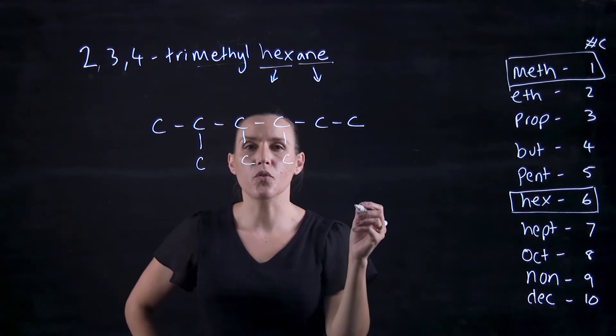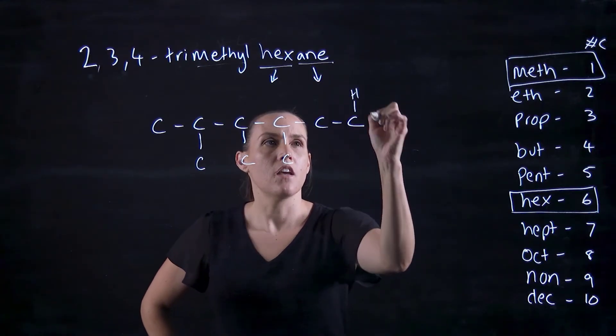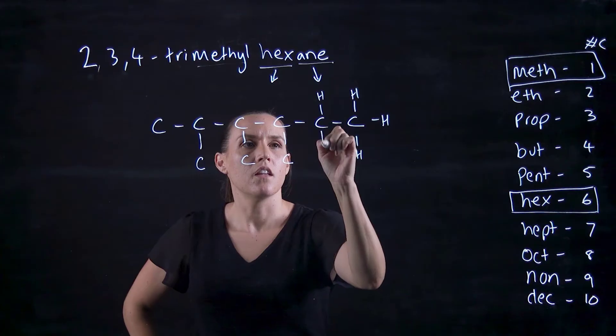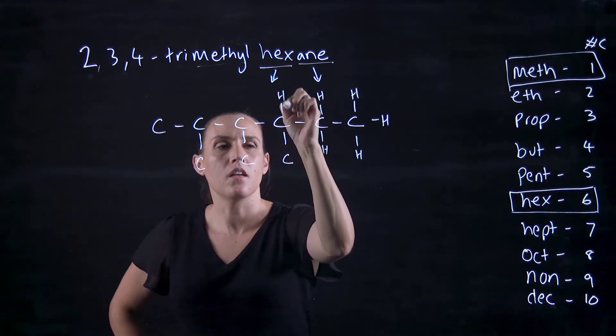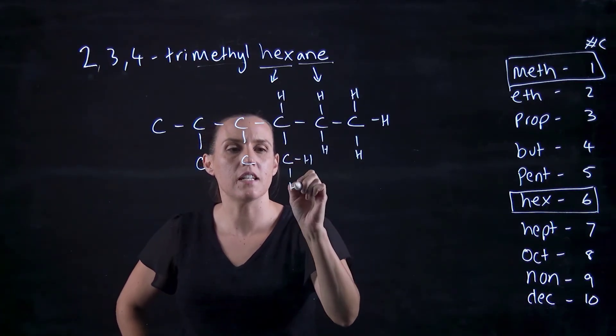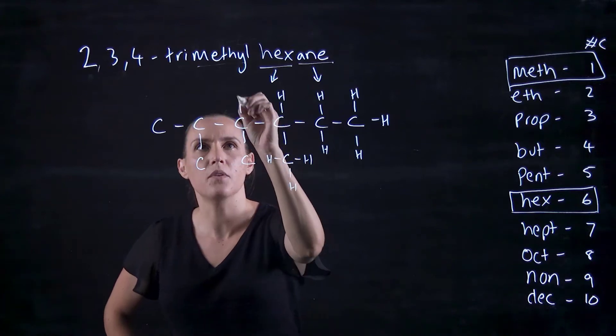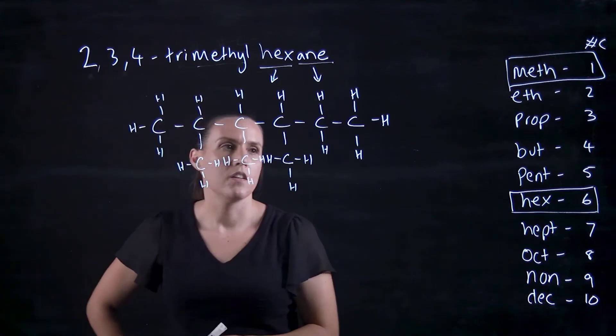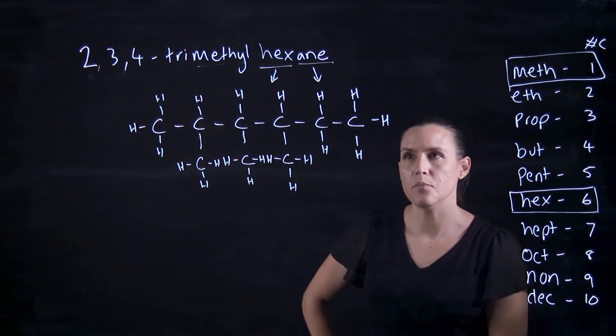So now I can go through and put in all my hydrogens. Knowing that each carbon makes four bonds, that would give me the number of hydrogens that I need to add. So just counting up to every carbon and making sure it's got four lines coming off it. So that would be how we would do that example.